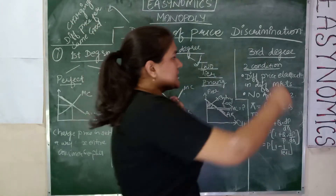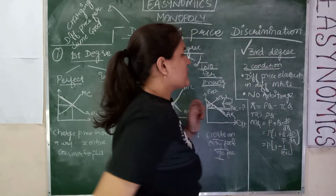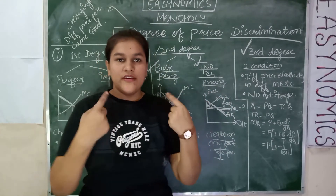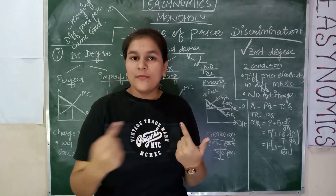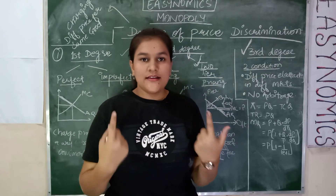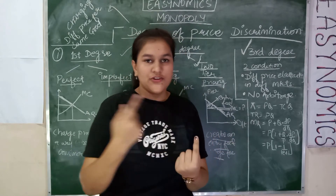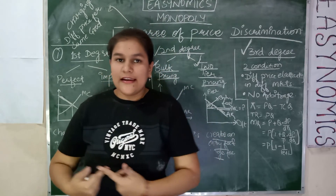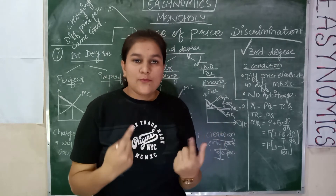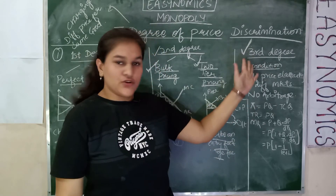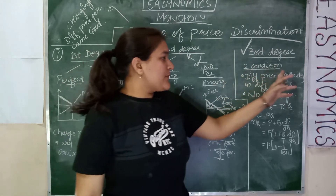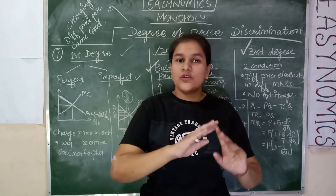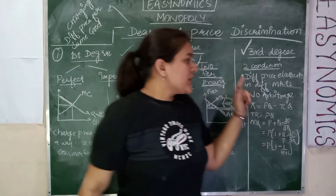Now let's come to third-degree price discrimination. There are two conditions for this: first, we have two different markets; and second, no arbitrage is possible between the two markets. This means if a monopoly charges 10 rupees in one market and 20 rupees in another, a buyer from the cheaper market cannot resell in the more expensive market. Additionally, there must be different price elasticity of demand across the markets. These are the assumptions for third-degree price discrimination.